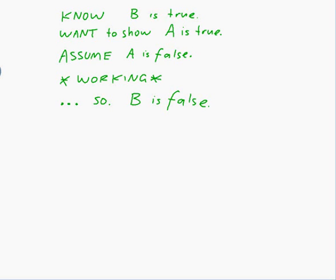But that's actually wrong because we know that b is actually true. So but b is true. So actually, a can't be false because if it was false, that would mean that b was false. And we know that b is true, so a is true. And that's the end of the proof. That's how proof by contradiction works.